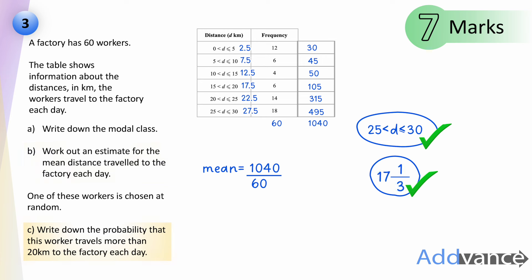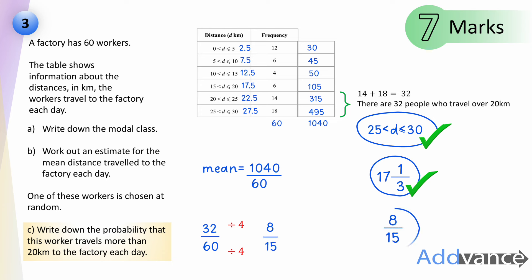Part C: one worker is chosen at random. Find the probability they travel more than 20 kilometres each day. Workers travelling more than 20 km are in the last two groups: 20–25 and 25–30. That's 14 plus 18 equals 32 people out of 60. Simplifying 32/60 gives 8/15. That is the probability for question 3, totalling 7 marks.